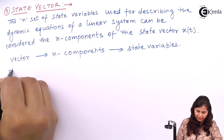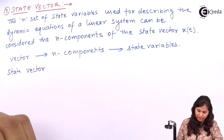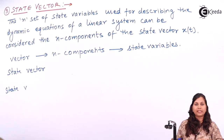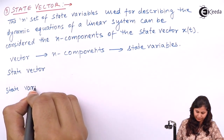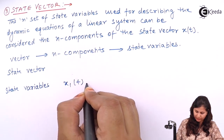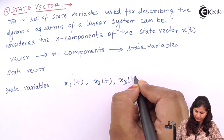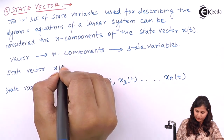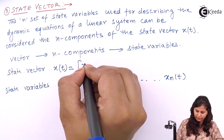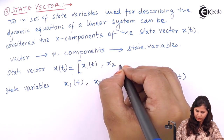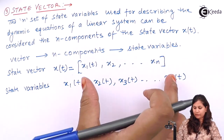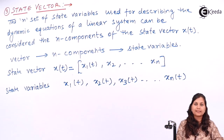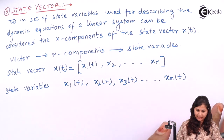The state vector x(t) has components x1(t), x2(t), through xn(t). So there are n state variables, and when they are represented in vector form, x(t) is the state vector whose components are x1(t), x2(t), through xn(t). If these n components are collectively written as components of a vector, that vector is known as the state vector.